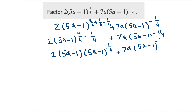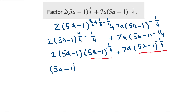Now I see that (5a minus 1)^(-1/4) appears in both terms — it is the greatest common factor. So I can factor it out, writing (5a minus 1)^(-1/4) times the remaining expression.